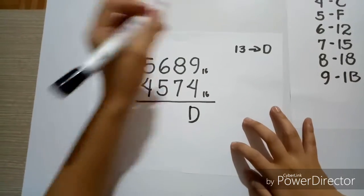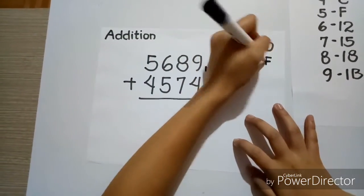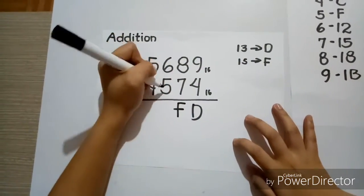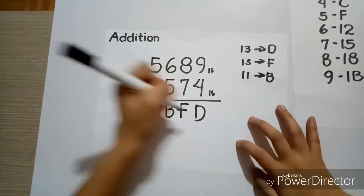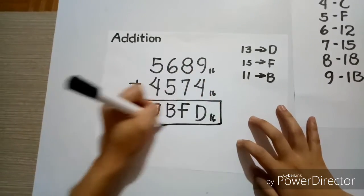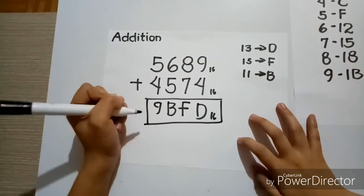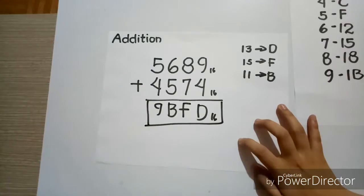Then, 8 plus 7 is equal to 16, which is represented by F, so let's write F. Then, 6 plus 5 is equal to 11, which is equal to B, so let's write B. Then, 5 plus 4 is equal to 9. And this is the final answer, 9BFD base 16.